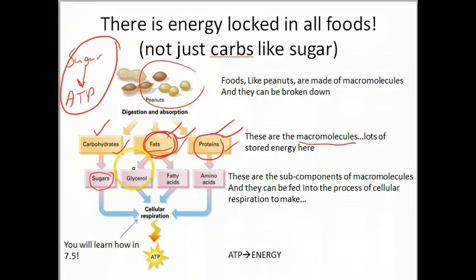Fats can be broken down into their components, which are glycerol and fatty acids. Proteins can be broken down into their monomers—the individual monomer of a protein is an amino acid. You might want to remember your monomers for various macromolecules.